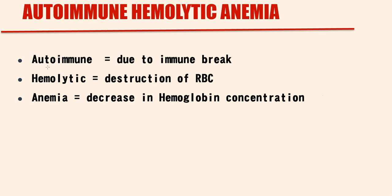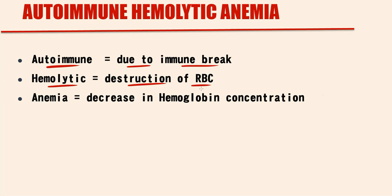Autoimmune hemolytic anemia is a condition where, due to a breaking immune system, organisms begin to produce immunoglobulin G antibodies against their own red blood cells. The destruction of red blood cells is called hemolysis. With destruction of red blood cells, the concentration of hemoglobin in the blood decreases, and decreasing hemoglobin is called anemia.